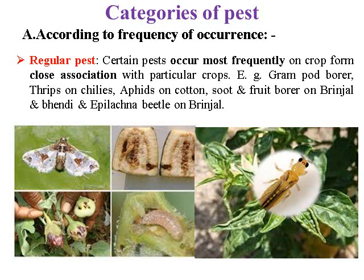Categories of pests according to frequency of occurrence. First class is regular pests: certain pests occur most frequently on crops due to close association with particular crops. For example, gram powder borer is very closely associated with gram, thrips with chili, aphids on cotton, and spotted fruit borer on brinjal. These are consistent examples of regular pests.